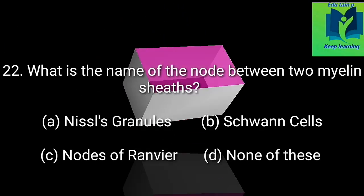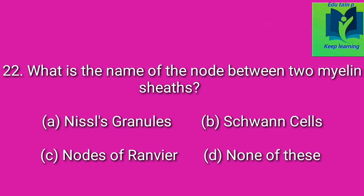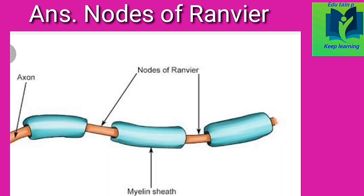What is the name of the node between two myelin sheaths? Option A: nizzles cranial. Option B: Schwann cell. Option C: nodes of Ranvier. Option D: none of these. Answer: nodes of Ranvier.